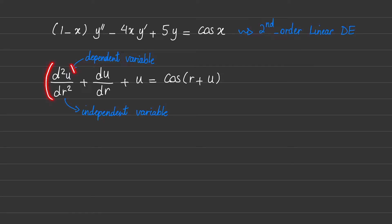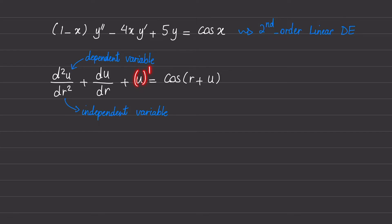The first term is the second order derivative that goes to the power of one and its coefficient is constant. The second term is the first order derivative that goes to the power of one and its coefficient is constant, and the third term is the zeroth order derivative that goes to the power of one and its coefficient is also constant.